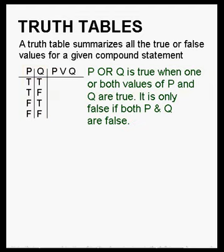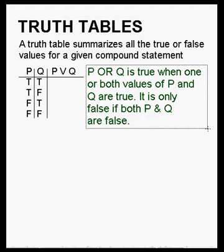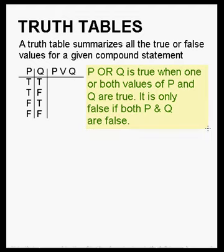Now we are going to create a truth table for P or Q. First you have to realize that P or Q is true when one or both values of P and Q are true, and it is only false if both P and Q are false.